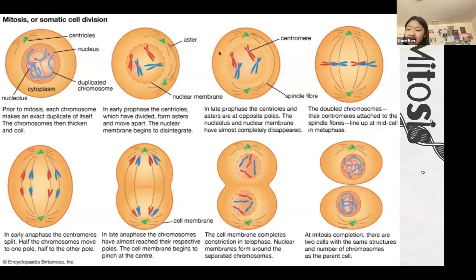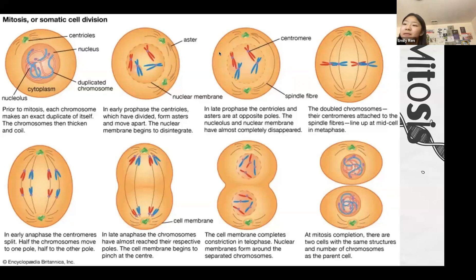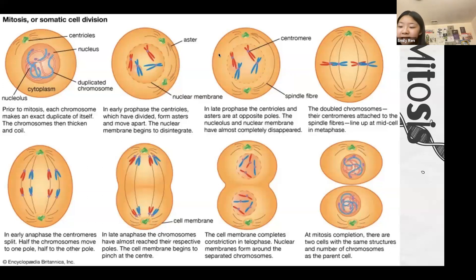Metaphase is when the kinetochore fibers pull and line all the chromosomes up in the center. If you see a bunch of chromosomes lined up together in the middle of a diagram, that's metaphase. There is a spindle checkpoint that ensures all sister chromatids are properly attached before anaphase proceeds.